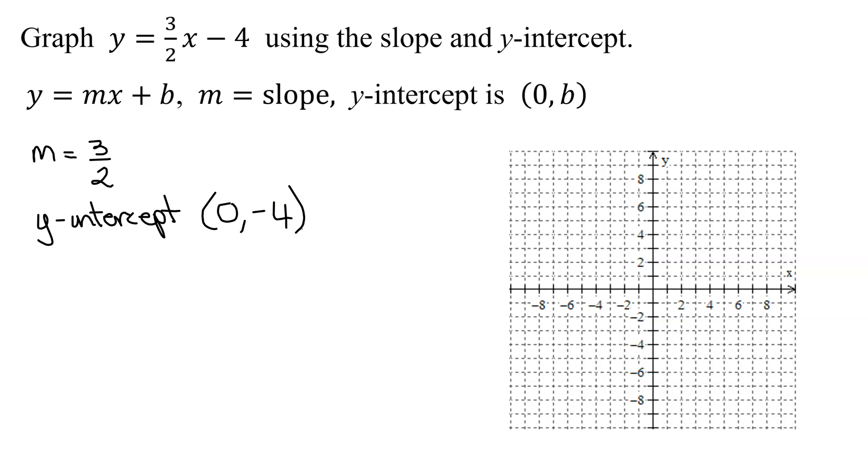Now I can start to graph my line. We always plot the y-intercept first, so go to the origin. The y-intercept is 0, negative 4. x is 0 means go nowhere in the x direction. y is negative 4, go down negative 4. There is my y-intercept.